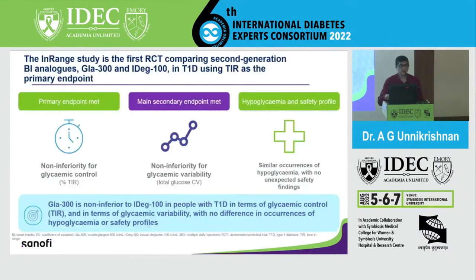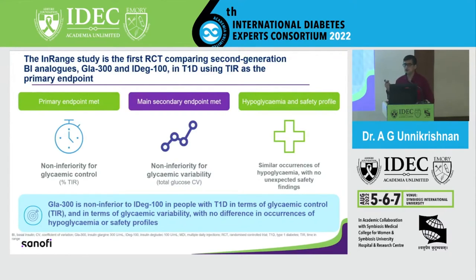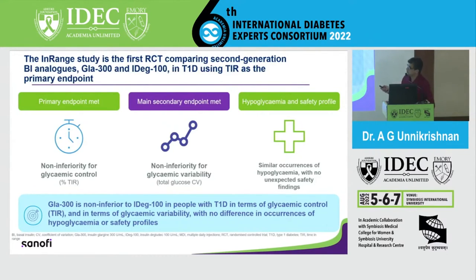Looking at hypoglycemia, there was again no difference between the two insulins. Sometimes you don't require a positive study showing statistical superiority — a study showing similarity or non-inferiority is good enough in clinical practice. Negative studies are also very important. This non-inferiority study showed that in terms of glycemic control measured by time in range, Glargine U300 and Degludec were similar. The coefficient of variation and the hypoglycemia and safety profile were also similar between these two insulins.